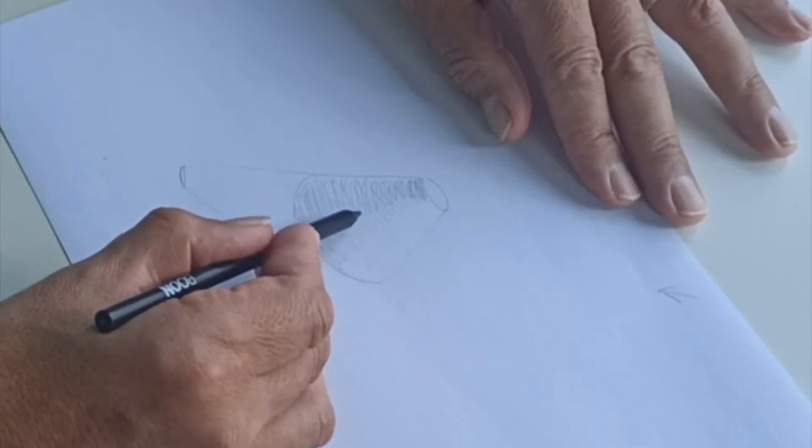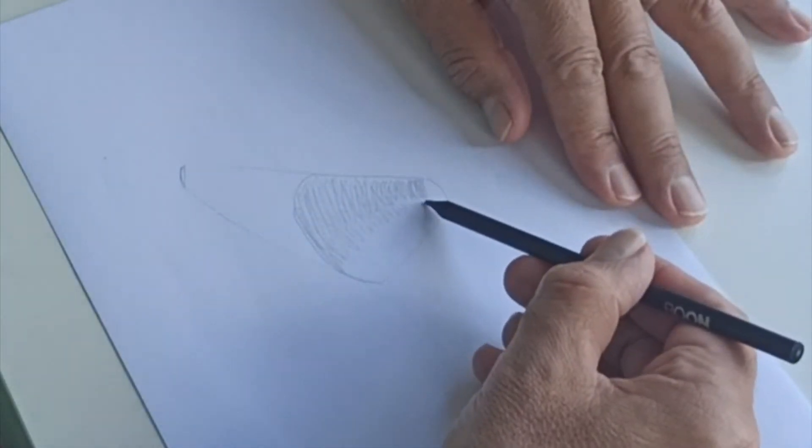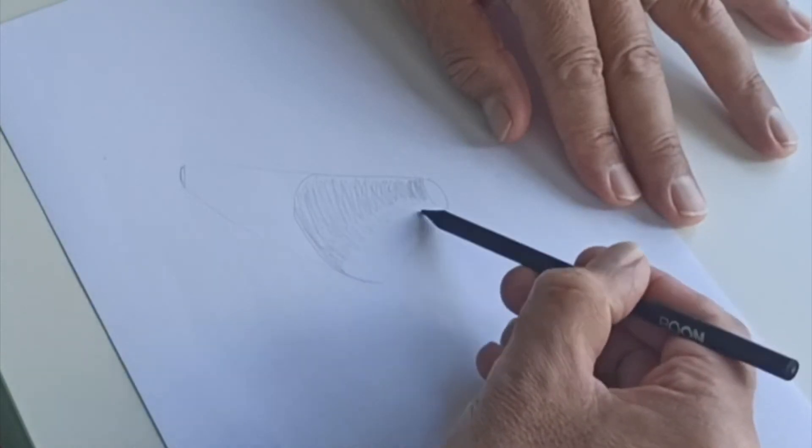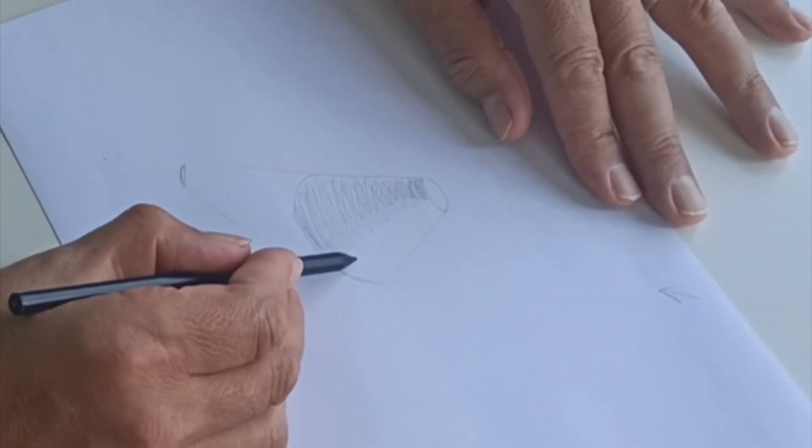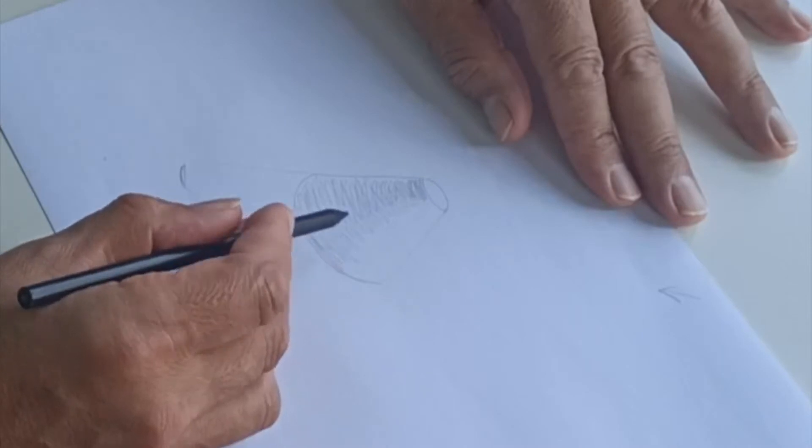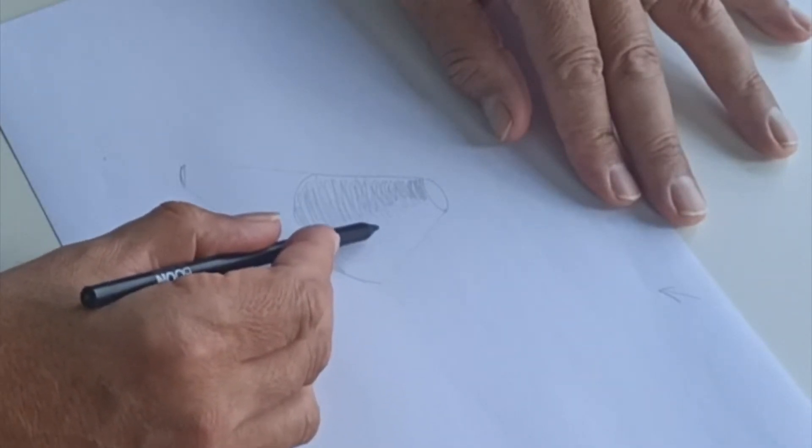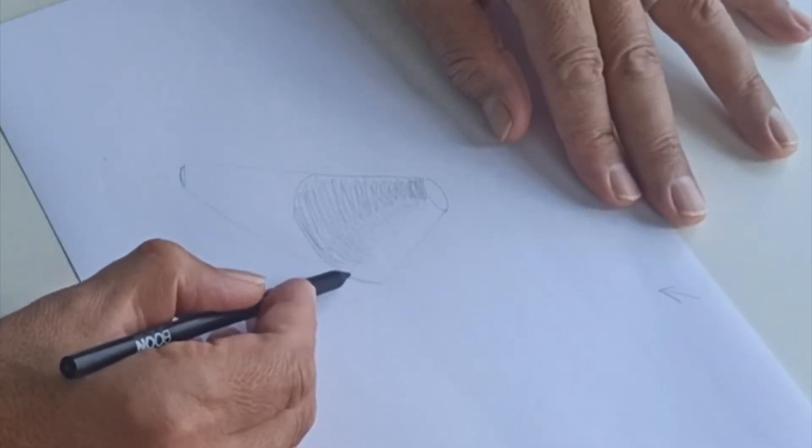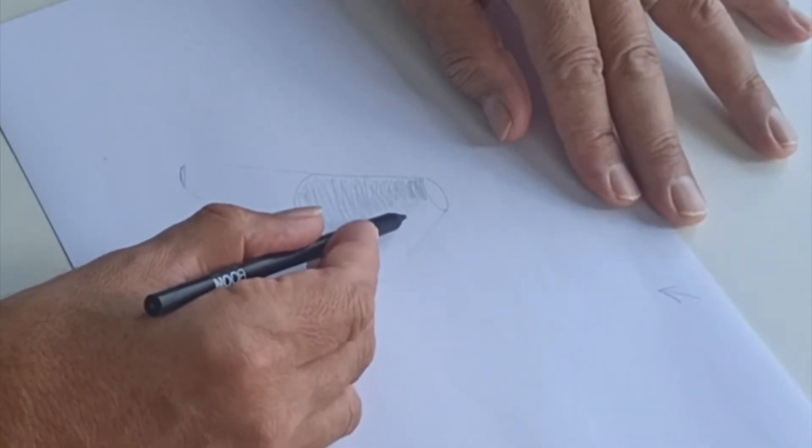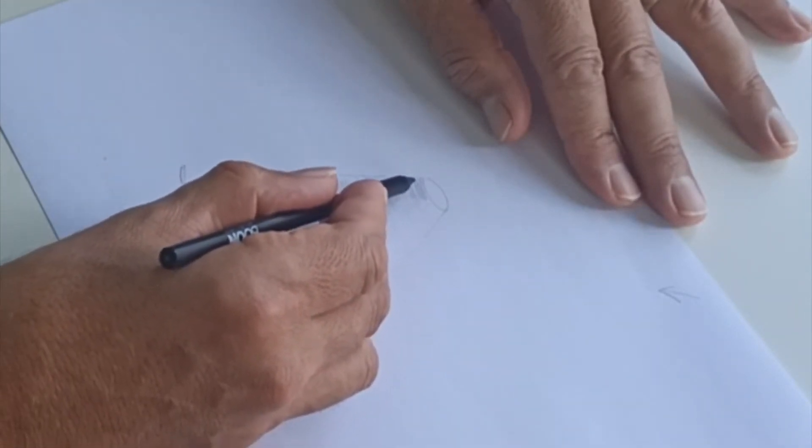Now the line has to be straight. Sunlight doesn't curve around corners. So we're going to go light across here and then fade to nothing. So here we go.